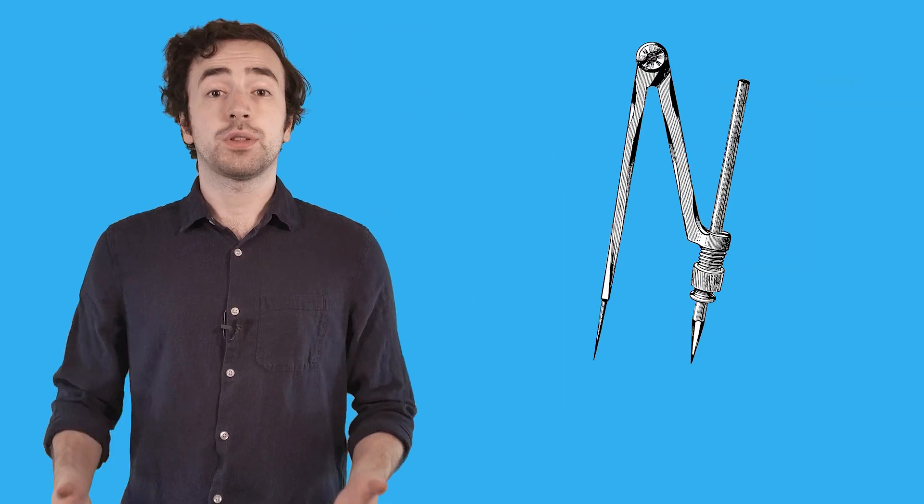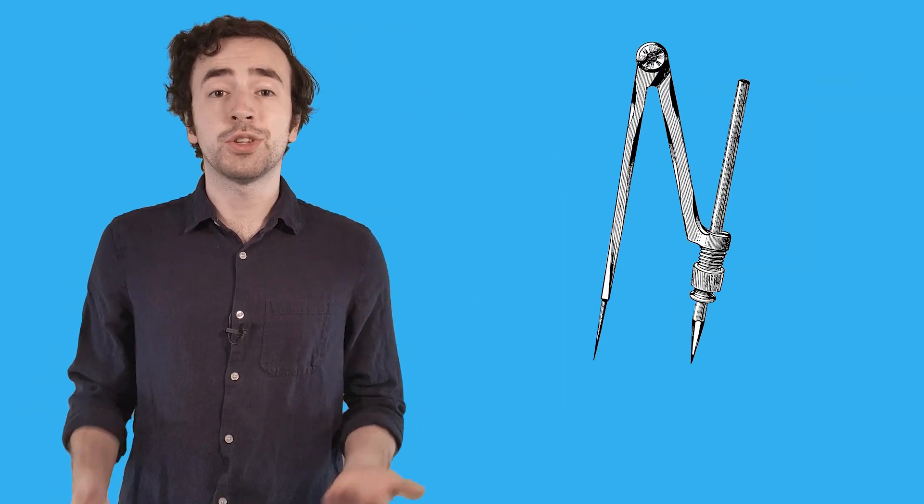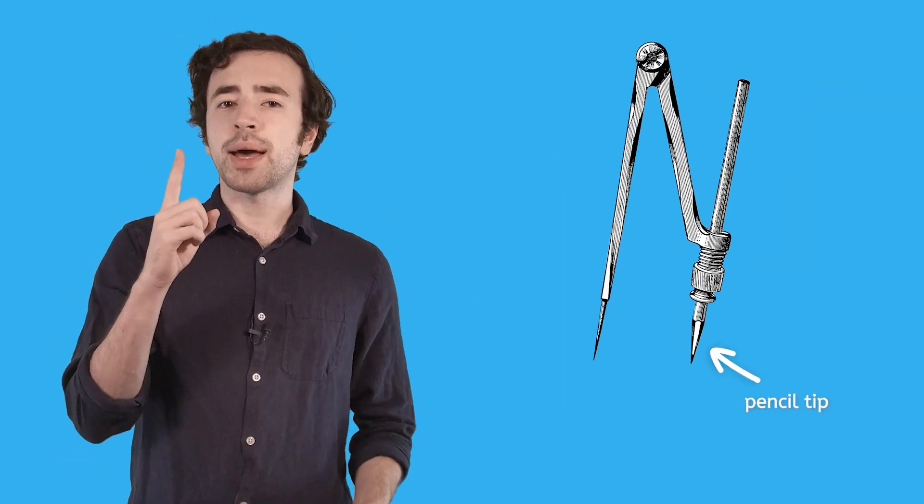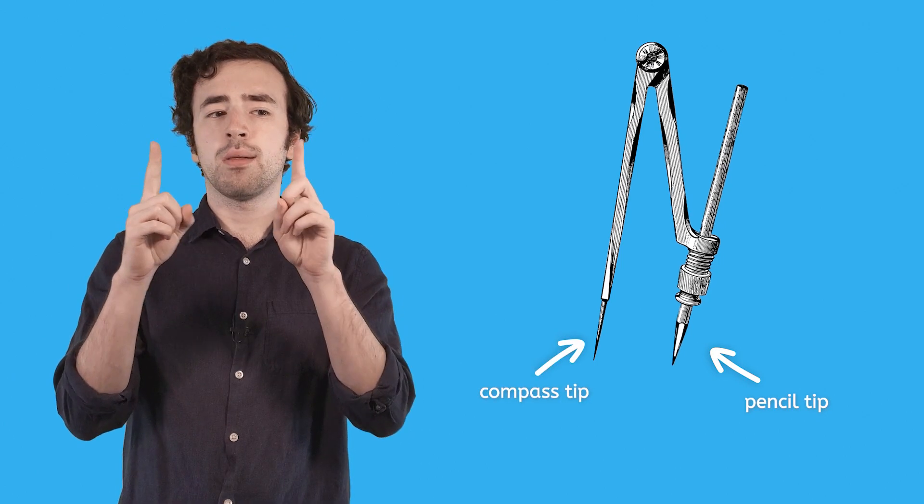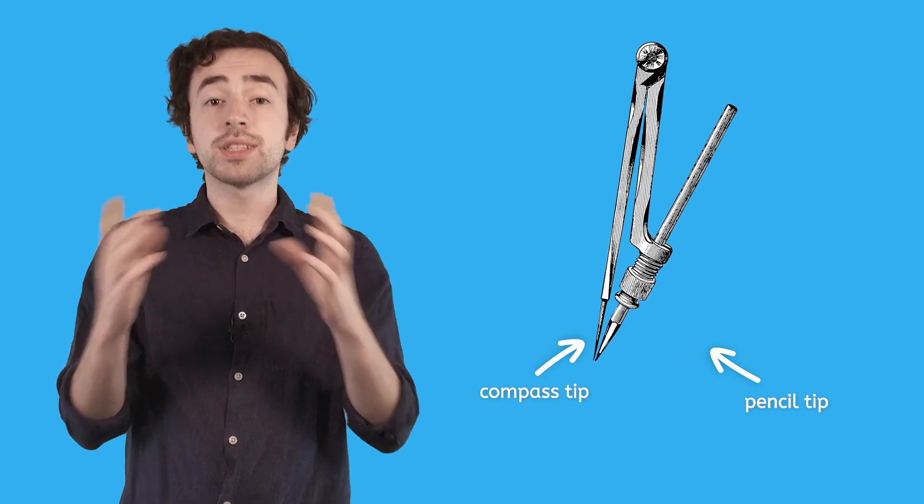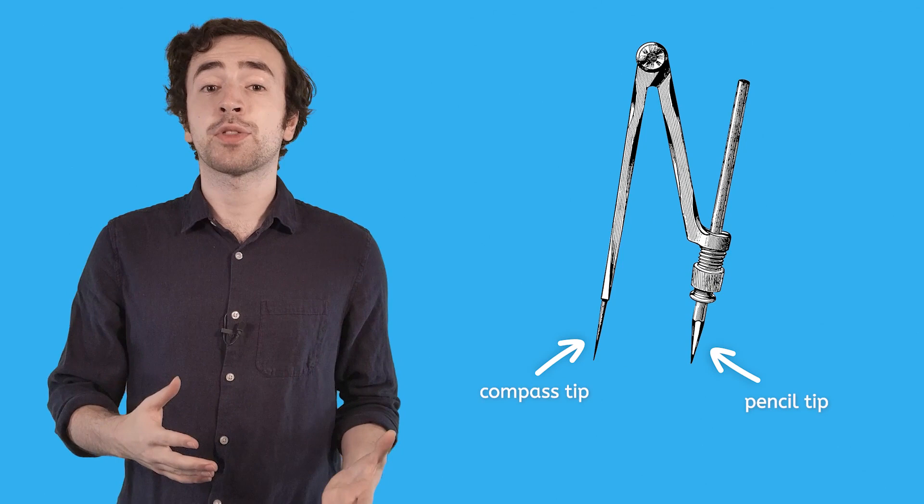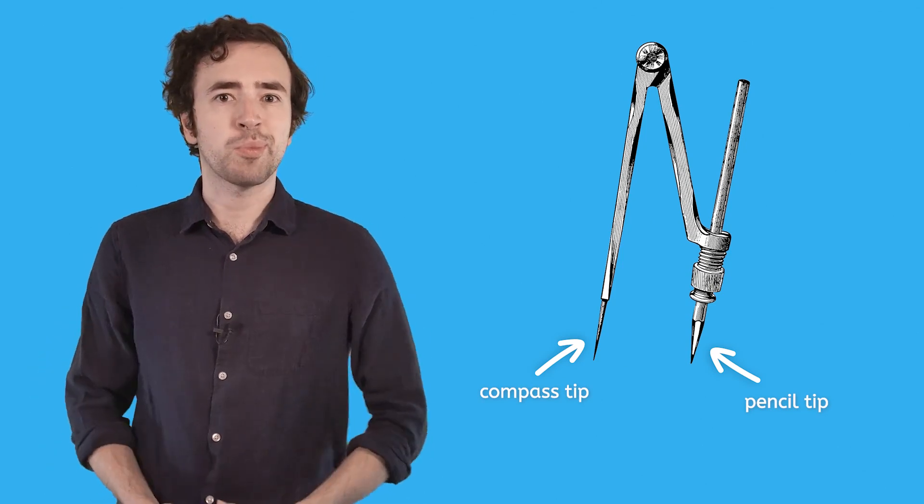Now we've never had to draw using a geometric compass before, so let's go over some tips and tricks to make this a smooth learning experience. First, when you're putting your pencil into your compass, make sure that the tip of the pencil and the tip of the compass line up with each other. This is to ensure that you've set the pencil at the right length to make drawing a circle possible.